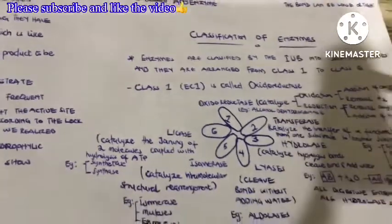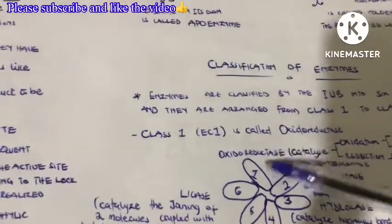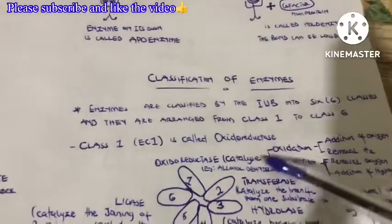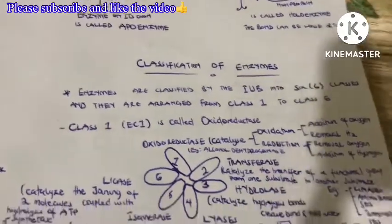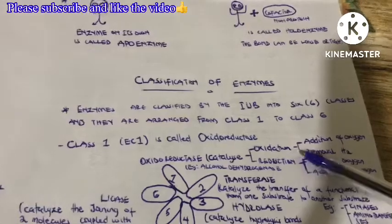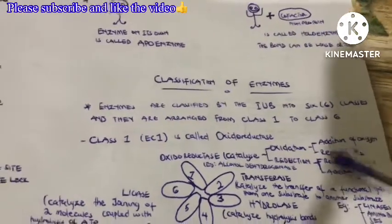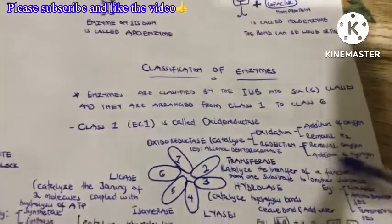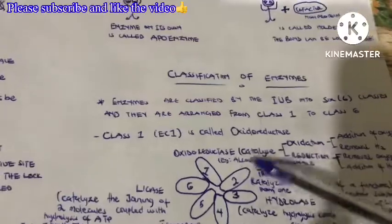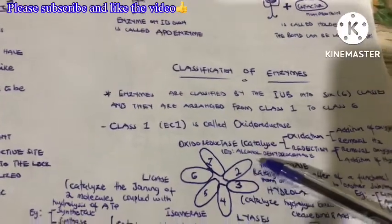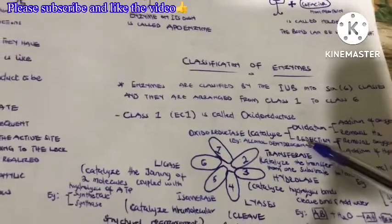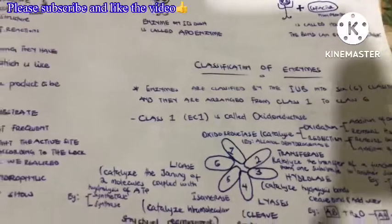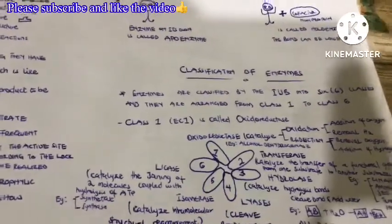The first class is known as the oxidoreductase enzymes. They catalyze oxidation-reduction reactions. Oxidation means either adding oxygen to a substrate or removing hydrogen from a substrate. Reduction means either removal of oxygen or addition of hydrogen to a substrate. Examples of class one enzymes are alcohol dehydrogenase and glucose dehydrogenase — mostly these enzymes end with 'dehydrogenase.'